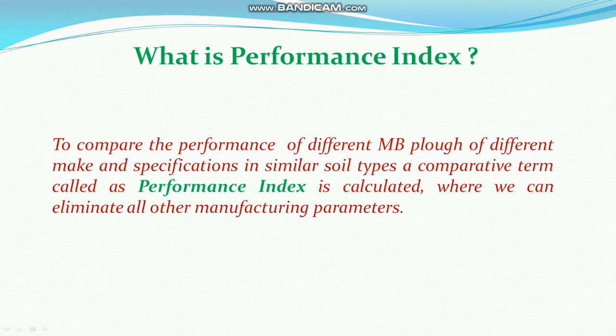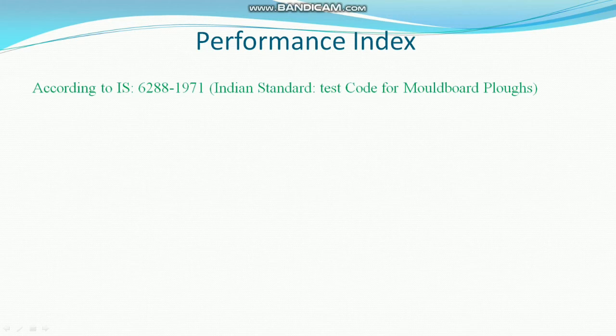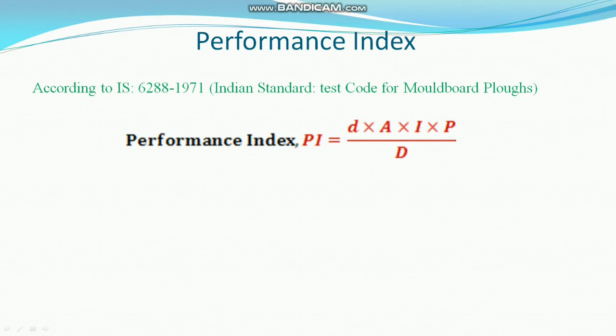When different moldboard plows are available in the market, we need to find out which one is the best. This can be determined from its performance index. You need to test under laboratory and field conditions so that a particular implement has a certain performance index, indicating which one is best suited for our conditions. The formula is given by IS standard 6288:1971, the test code for moldboard plows.